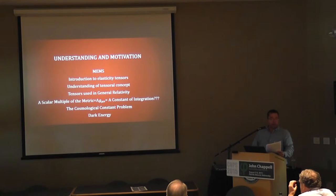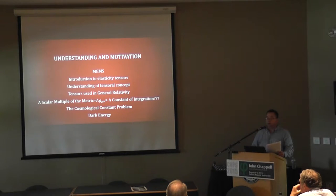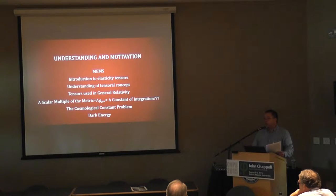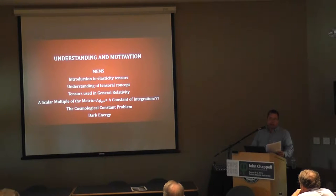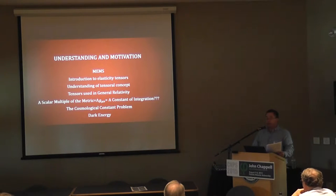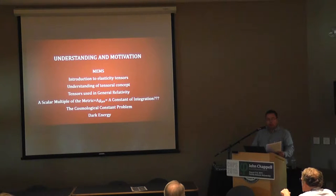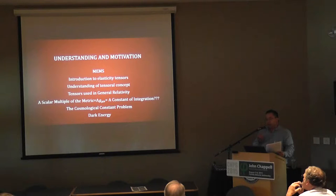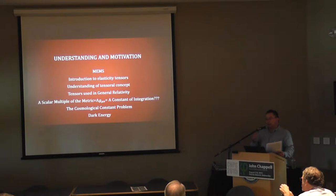Up until probably about five years ago, I had no problem with relativity. I'd always learned that the speed of light is constant in all frames of reference, and I assumed they had looked at everything they could have. I'd never really heard the word ether — that's not something you're taught in a physics class. But once I found out about the cosmological constant problem and dark energy, I couldn't mentally equate how you could have a constant of integration in relativity.